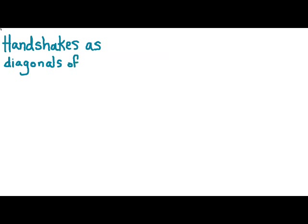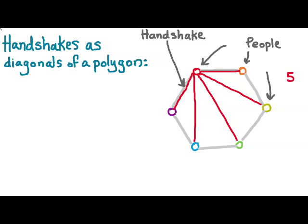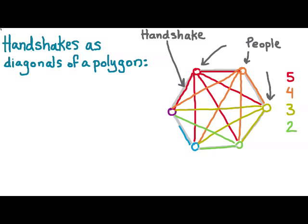We can model the handshakes as diagonals of a polygon. So if we have the six people standing around in a circle, or in this case a hexagon, then we can model the handshakes by drawing in the diagonals or also the edges of the polygon. So the red person goes, when they shake everybody's hands, we see that there are five diagonals that we've drawn in for the polygon. And then the orange person shakes four hands, the yellow shakes three, the green shakes two, and the blue one shakes one for a total of 15 handshakes.